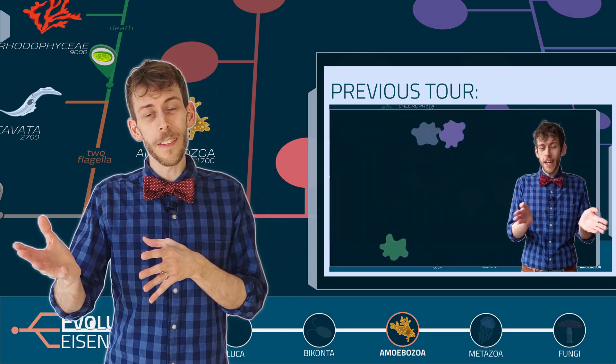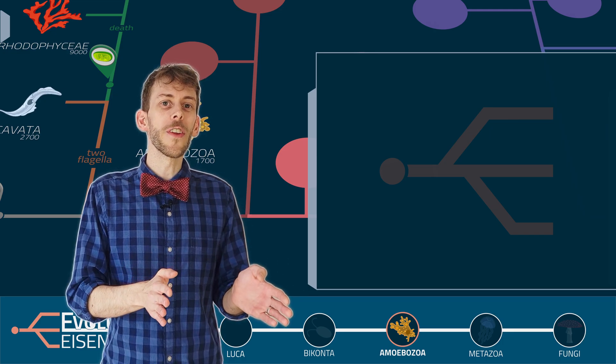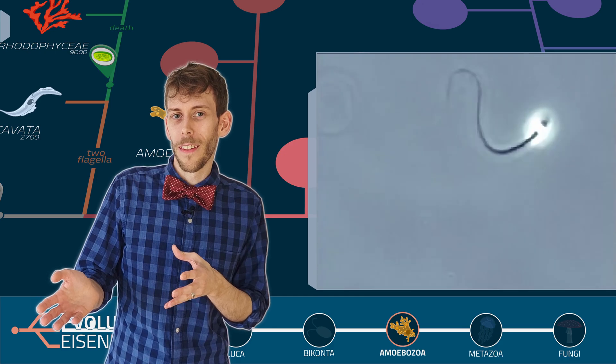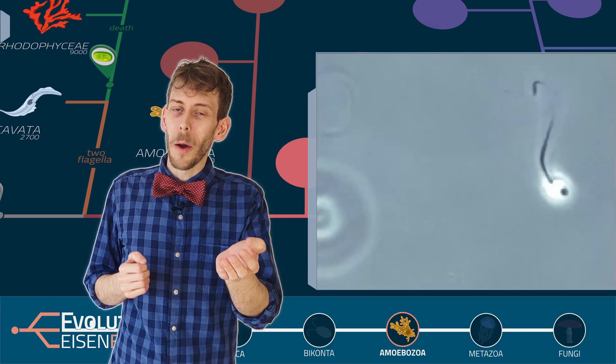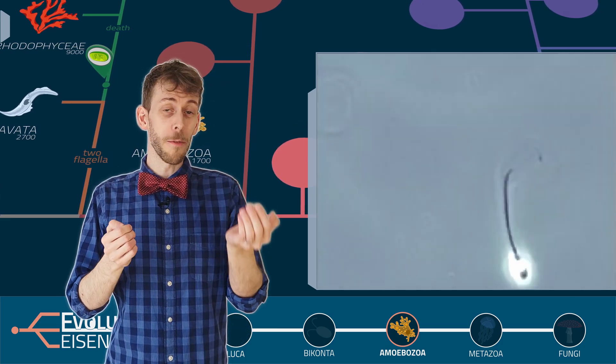But fungi and also animals are opistoconts. Opistocont means posterior flagellum. All opistoconts have a single flagellum. And that includes you. Well, you had one when you were very very young, or at least half of you. The half came from your dad.